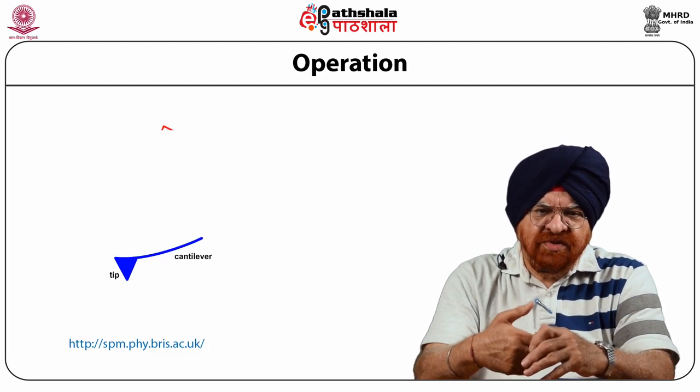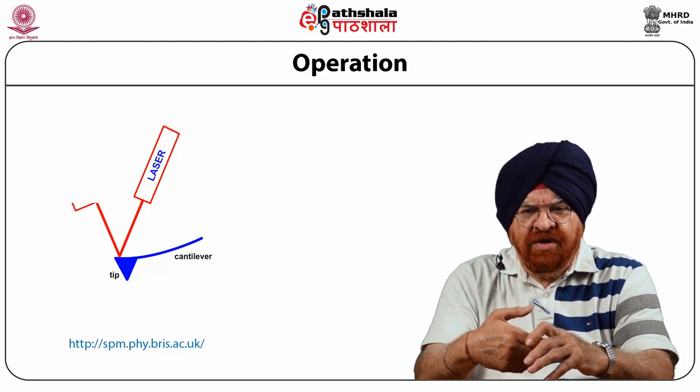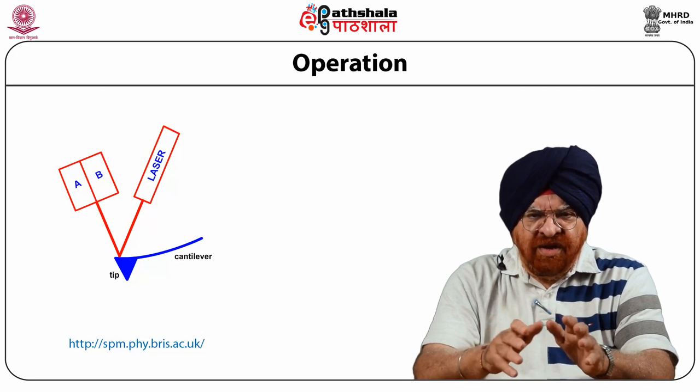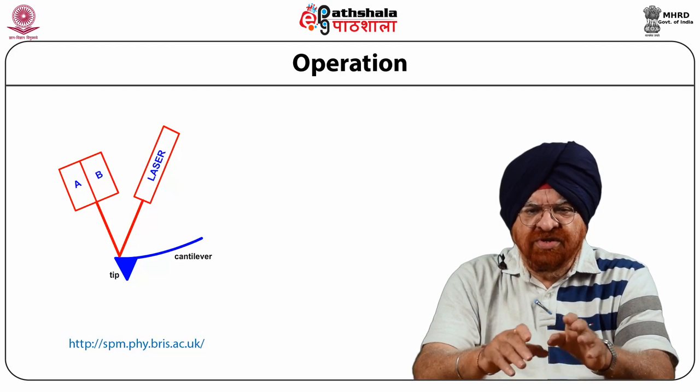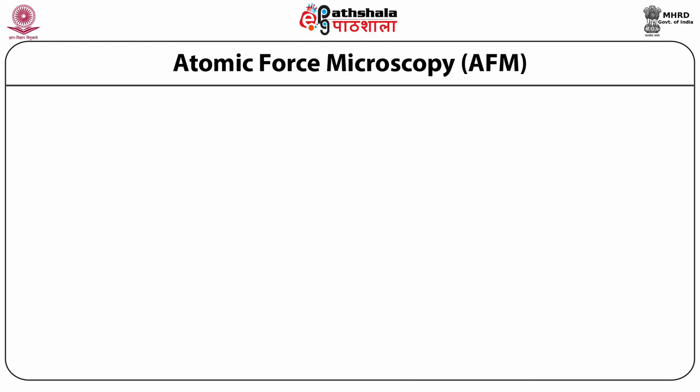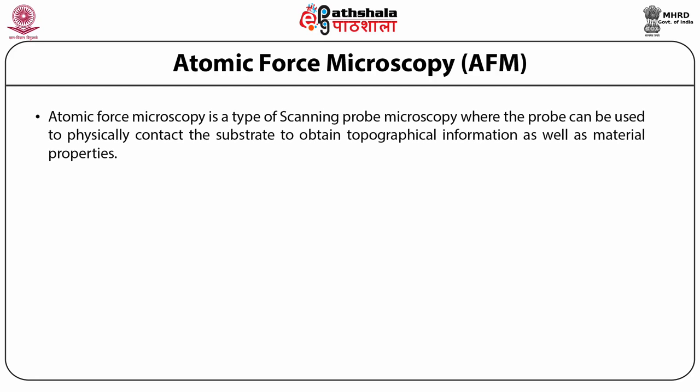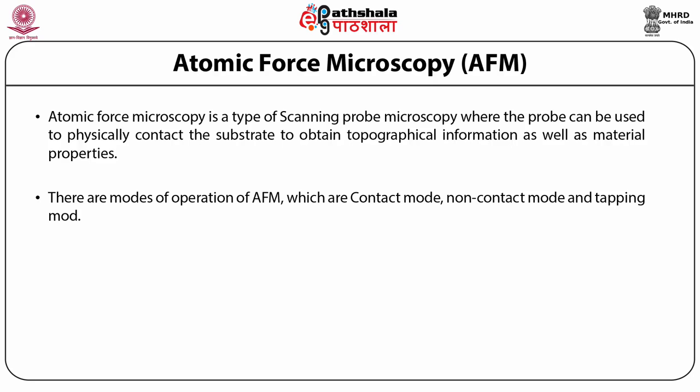Scanning probe microscopes operate by detecting the deflection in the cantilever. Modern scanning probe microscopes use a split photodiode to detect this deflection. Atomic force microscopy, AFM, is a type of scanning probe microscopy where the probe can be used to physically contact the substrate to obtain topographical information as well as material properties. There are three modes used in AFM: contact mode, non-contact mode, and tapping mode.